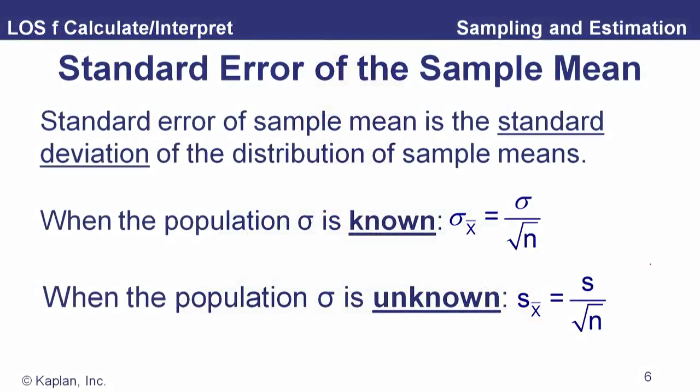The standard error of the sample mean reflects the fact that larger samples are better guesses of the mean — more closely clustered, less spread out. We compute it as the standard deviation divided by the square root of the sample size n, and we call this the standard error. If we don't know the population standard deviation, we use the sample standard deviation S. So the variance of the sampling distribution is sigma squared over n, and taking the square root gives sigma over the square root of n — the standard error is the standard deviation of the sample means.